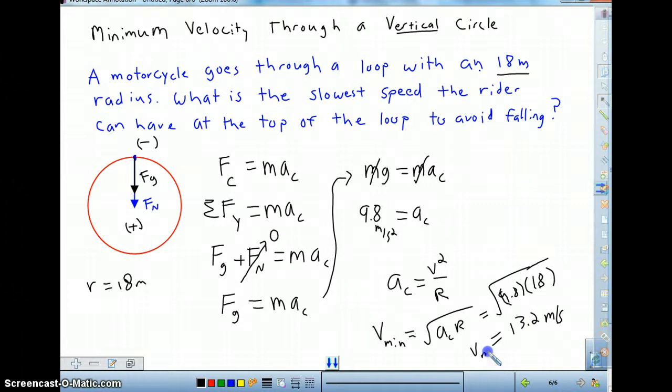Now just to reinforce the note, the way we found minimum velocity was setting the force, the direct force causing me to go in a circle which was the track pushing back on me at that exact moment at the min velocity setting that equal to zero. Finding the centripetal acceleration from there and solving for V using that centripetal acceleration at min.